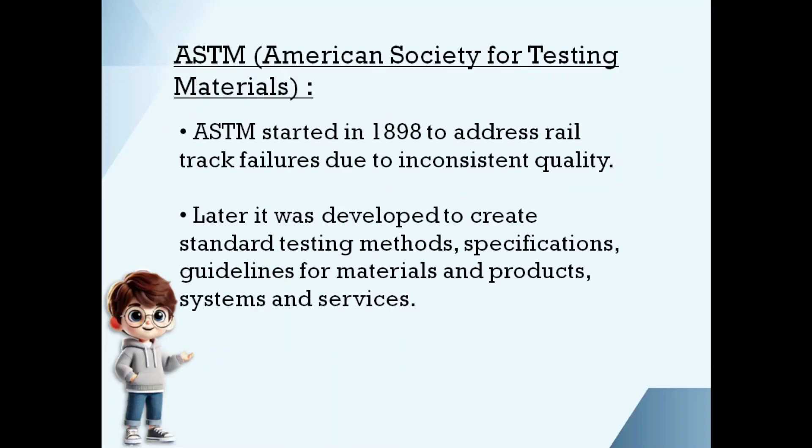ASTM, American Society for Testing Materials, was started in 1898. The first era of steel usage in construction started with railway tracks. After several days of construction of railway tracks, they found some damages due to inconsistent quality and inconsistent shapes. Then ASTM was founded to standardize all the products, specifications, limitations, testing methods, and guidelines for systems and services.